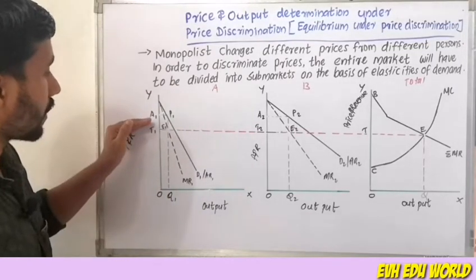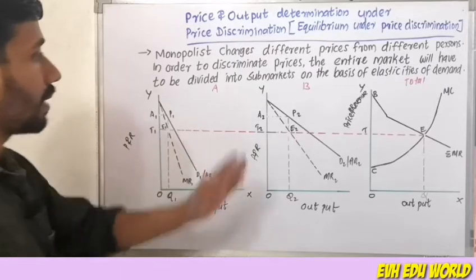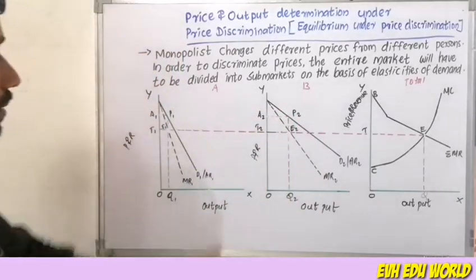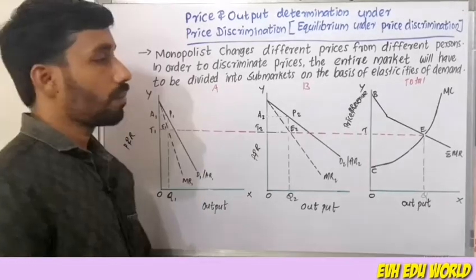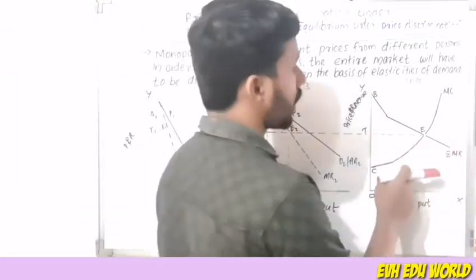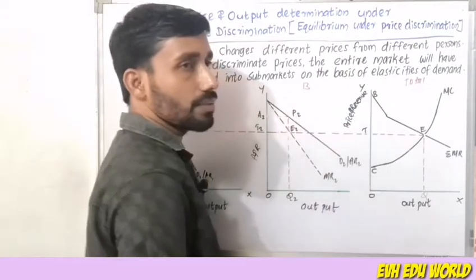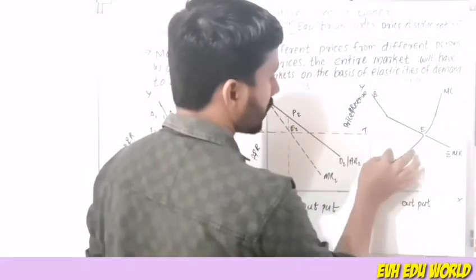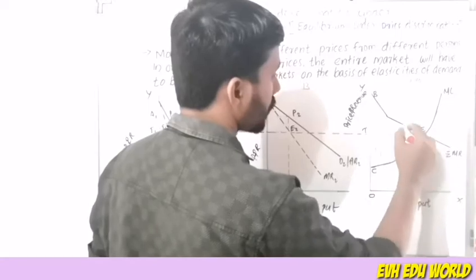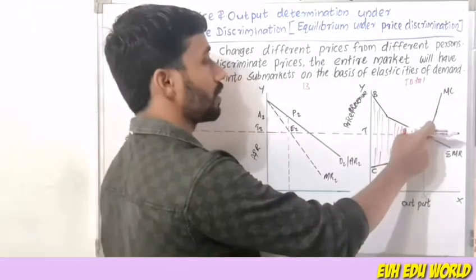We have to look at the profit area. P1, A1, T1, E1 is the profit area in market A. P2, E2, T2, A2 is the profit area in market B. If you compare the two markets, we have a total combined representation where marginal cost equals marginal revenue — that point is the equilibrium point and maximum profit area.